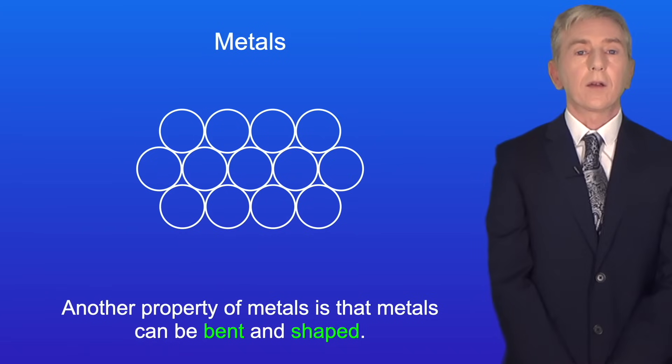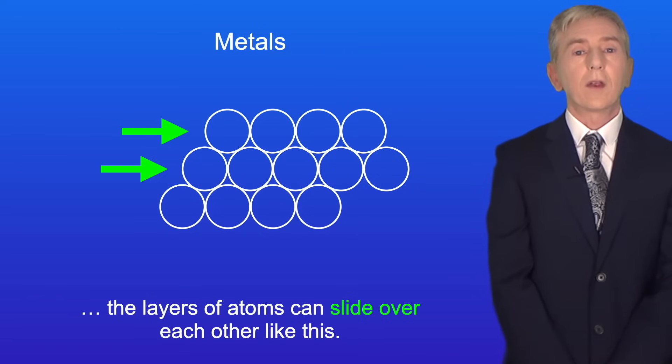Now another property of metals is that metals can be bent and shaped. That's because in metals the layers of atoms can slide over each other like this.